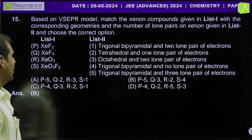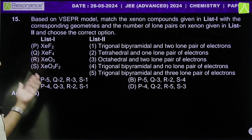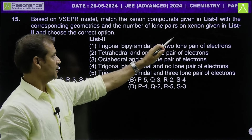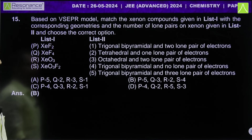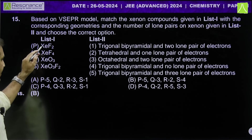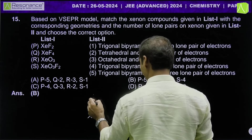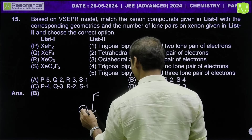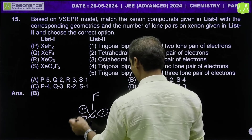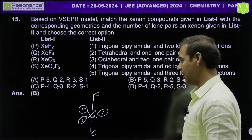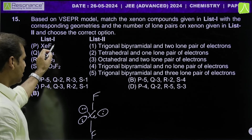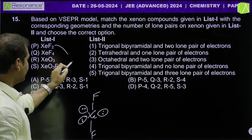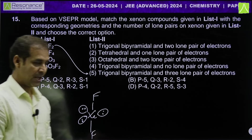Let's come to the next question: based on VSEPR model, match compounds in List 1 with geometries and lone pairs in List 2. XeF2: 5 electron pairs total — 2 bond pairs, 3 lone pairs. The 3 lone pairs go to equatorial positions. Shape is linear but geometry is trigonal bipyramidal with 3 lone pairs.